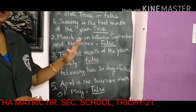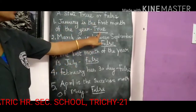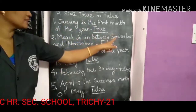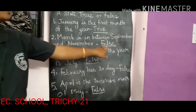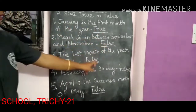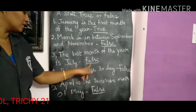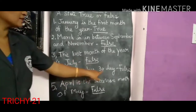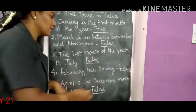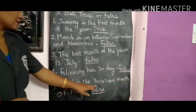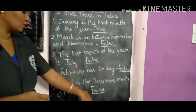So once again: January is the first month of the year — TRUE. March is between September and November — FALSE, because October is between them. The last month of the year is July — FALSE, it is December. February has 30 days — FALSE, it has 28 days. April is the succeeding month of May — FALSE, June is the succeeding month of May.